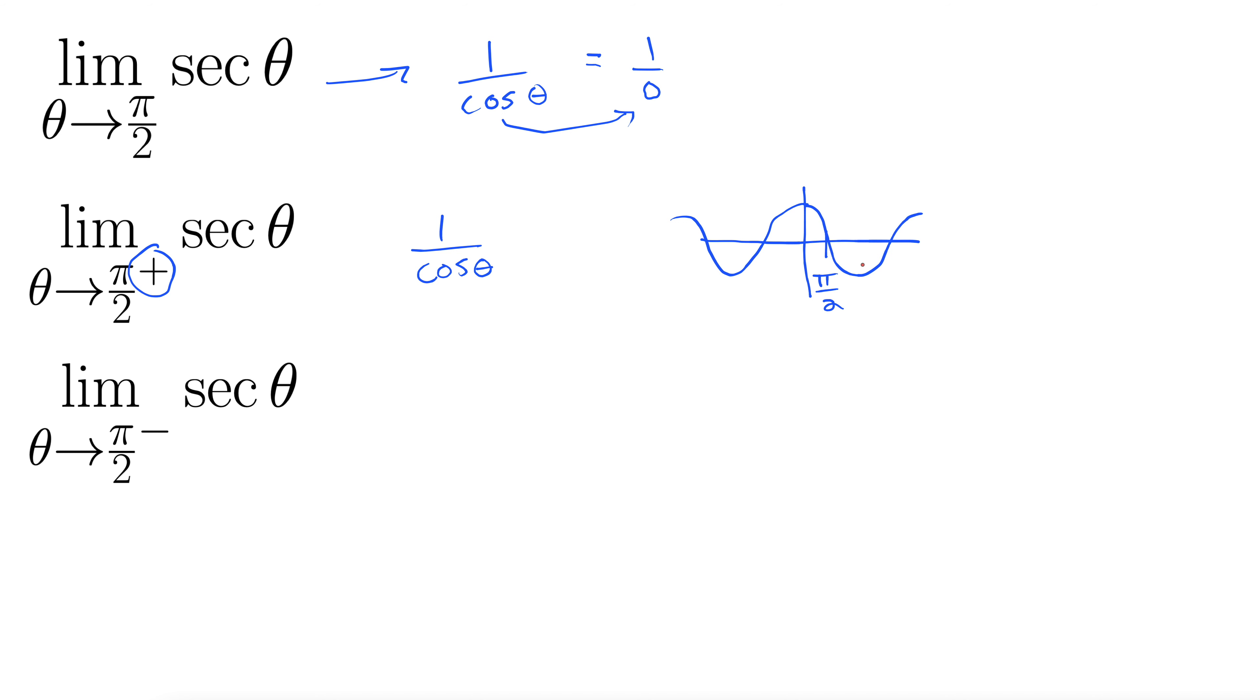As we approach π/2 from the positive direction, which is from the right, we're coming from the positive direction. Notice that cosine is negative. So 1 over cosine is all going to be negative, so this is going to shoot us off to negative infinity.